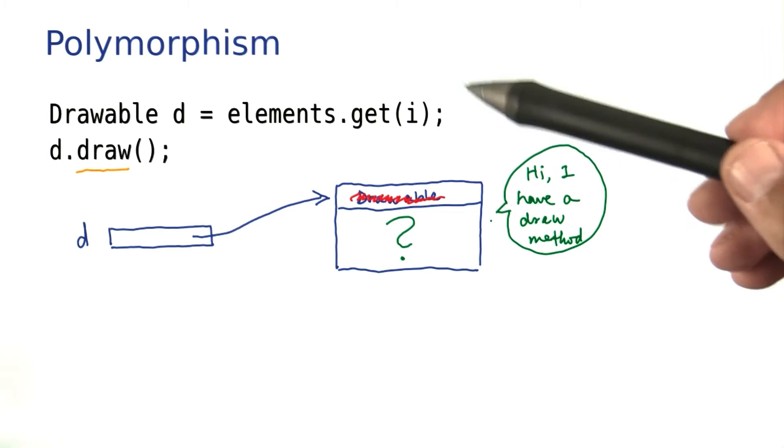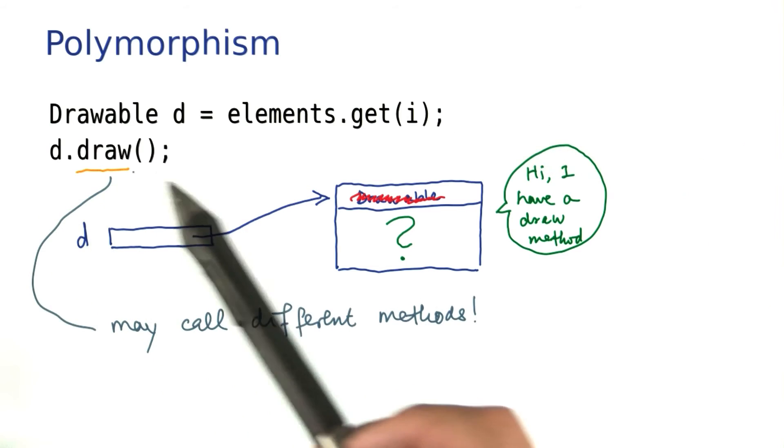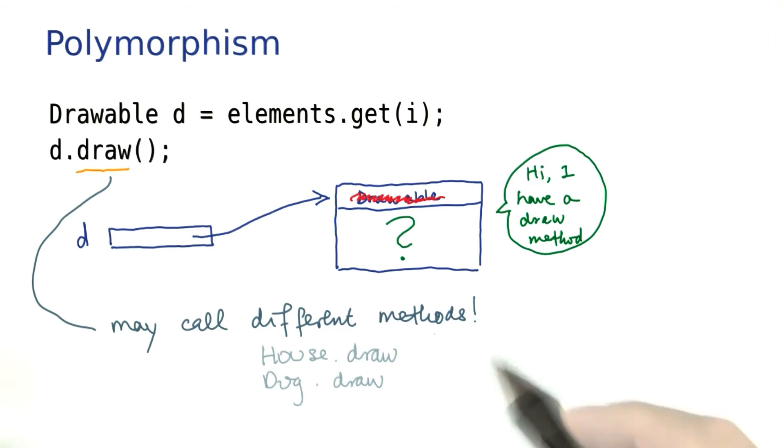As you loop over the various elements in the array list, this line of code may call different methods - the draw method of the house class, the dog class, or of some other class, so far unimagined, that also chooses to implement the drawable interface.